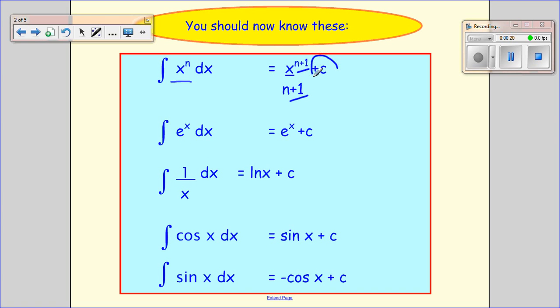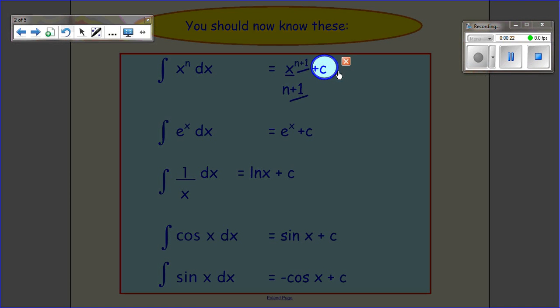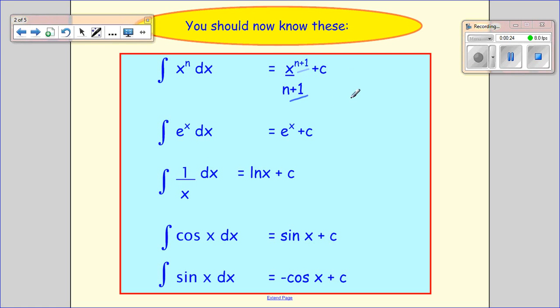And we remember to put our plus c on because we've got an indefinite integral because the limits aren't there. And when we integrate e to the x, we just get e to the x because when we differentiate e to the x, we get e to the x.